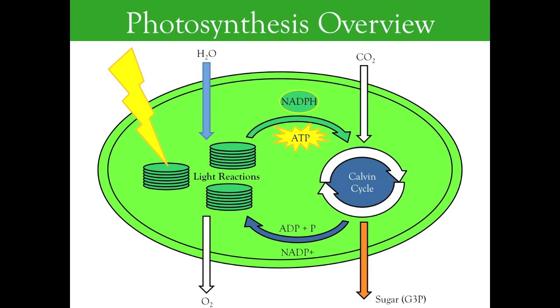As we have discussed, photosynthesis occurs in two major stages, the light reactions and the dark reactions called the Calvin Cycle. The light reactions occur in the thylakoid membranes and produce NADPH, ATP, and oxygen using water and light.